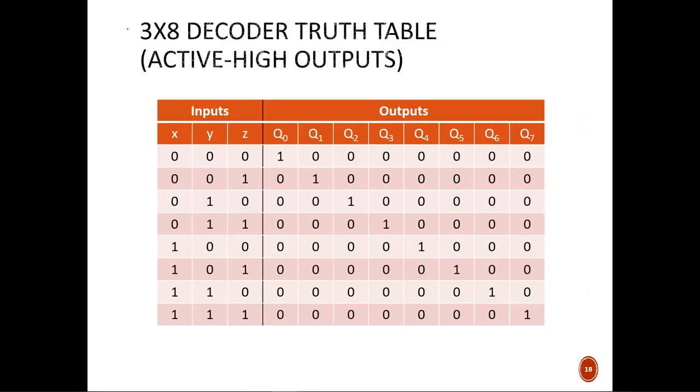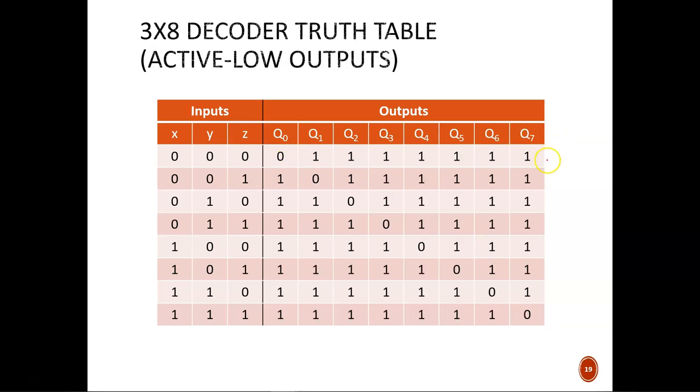That same logic can be summarized in a truth table, like you see here. It is clear to see that in the active high setup, only one output line equals 1, while all the others equal 0. And that 1 moves diagonally down the rows, because we structured the truth table as a straight count. The active low output truth table is seen here. The output columns are just the complement of the previous table.